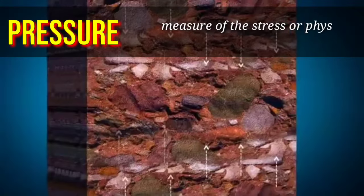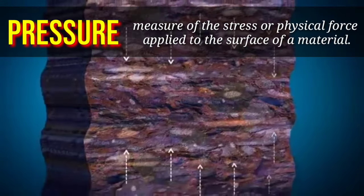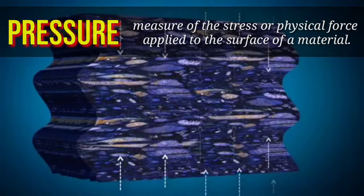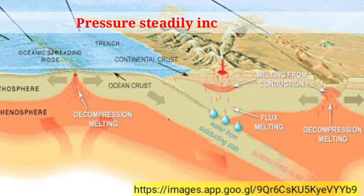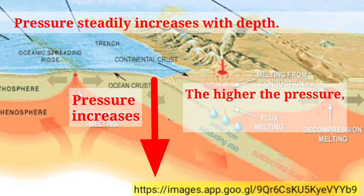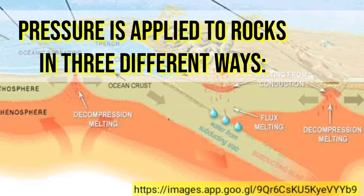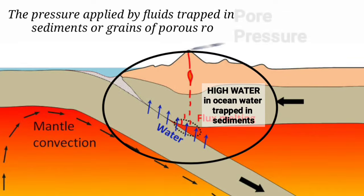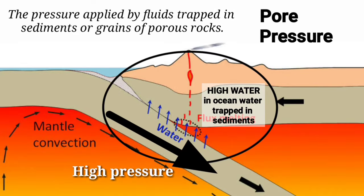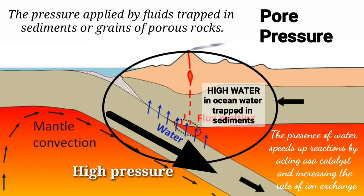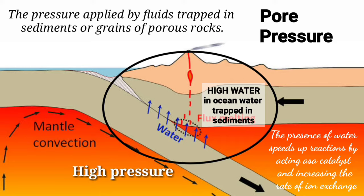Pressure refers to the measure of the stress or physical force applied to the surface of a material. Pressure steadily increases with depth — the higher the pressure, the greater the degree of metamorphism. Pressure is applied to rocks in three different ways. The pressure applied by fluids trapped in sediments or grains of porous rock is called pore pressure. The presence of water speeds up reactions by acting as a catalyst in increasing the rate of ion exchange. This usually happens in subduction zones.